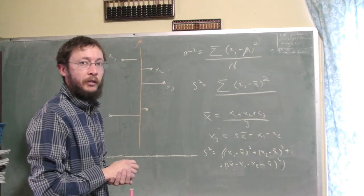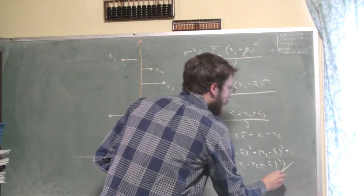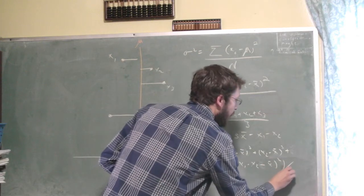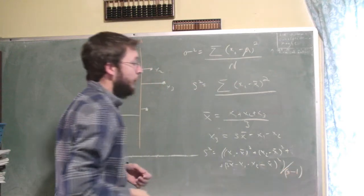So when we compute the average squared distance from the mean, we're doing it relative to the number of free variables. That's only 2, x1 and x2. So really what we're dividing by is not n, the sample size, but rather n minus 1.